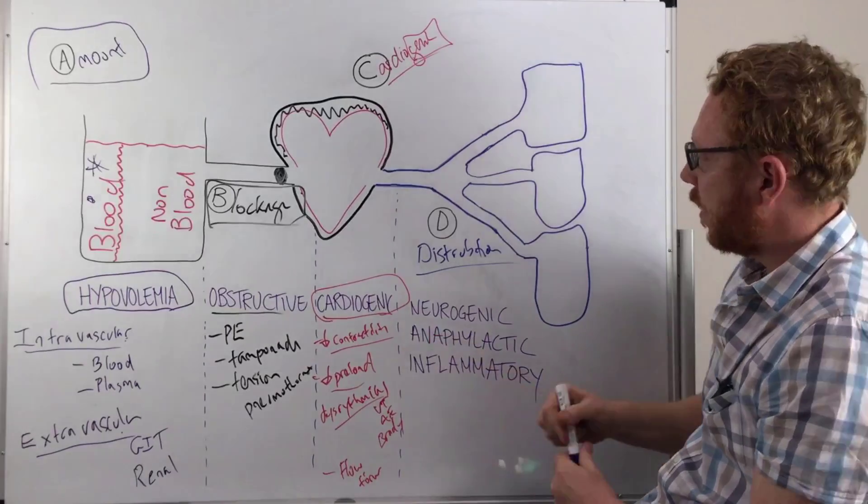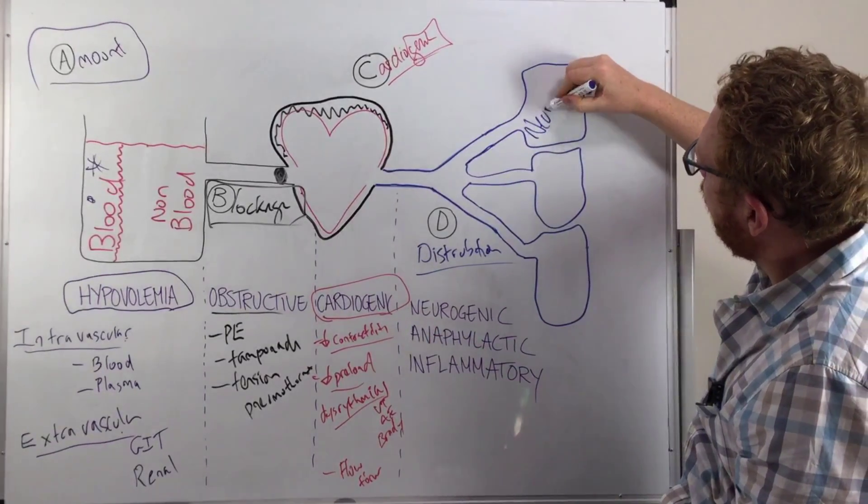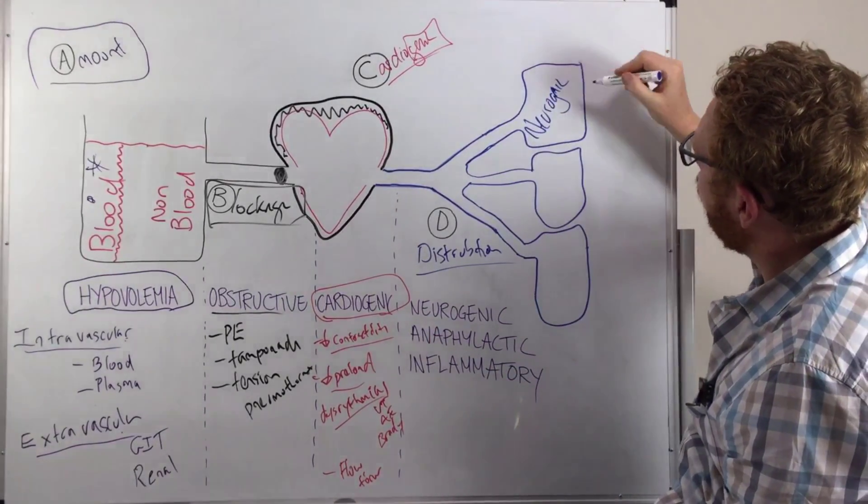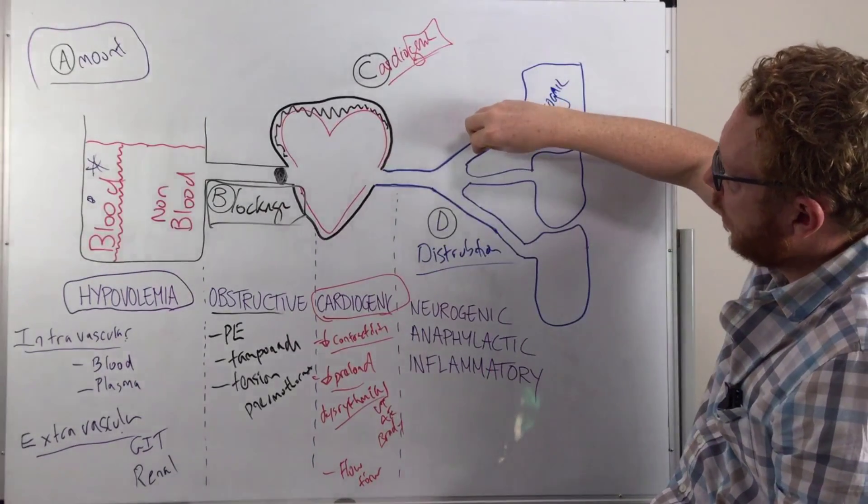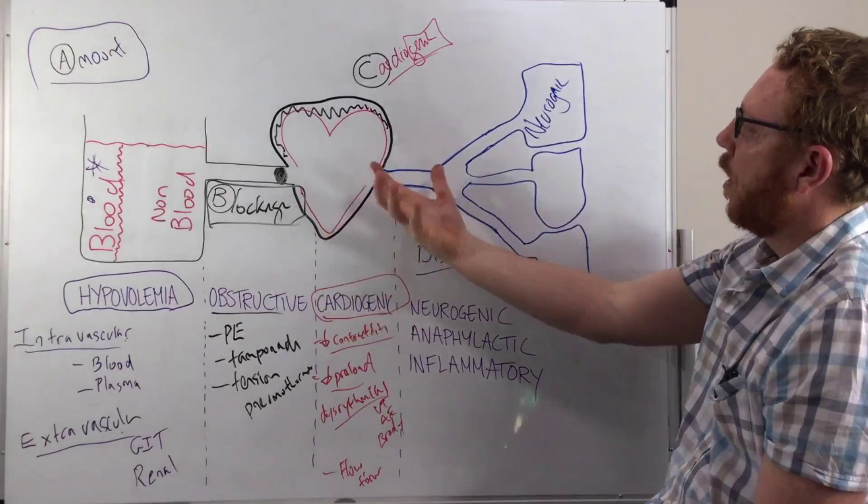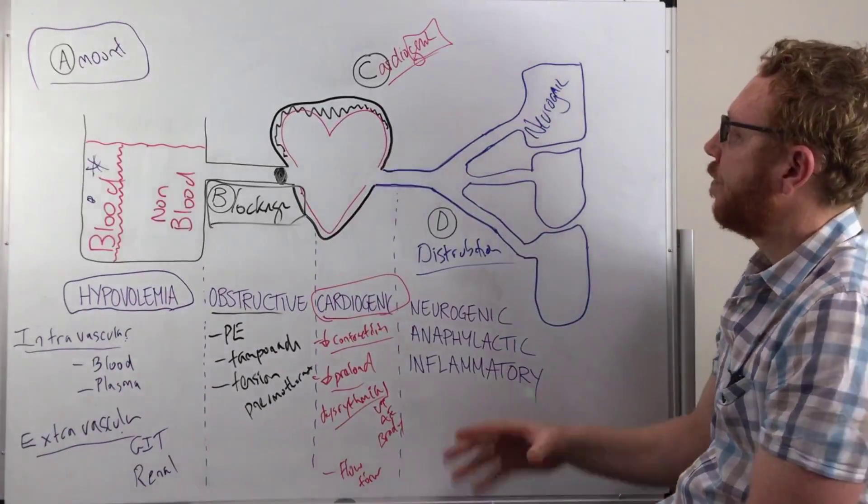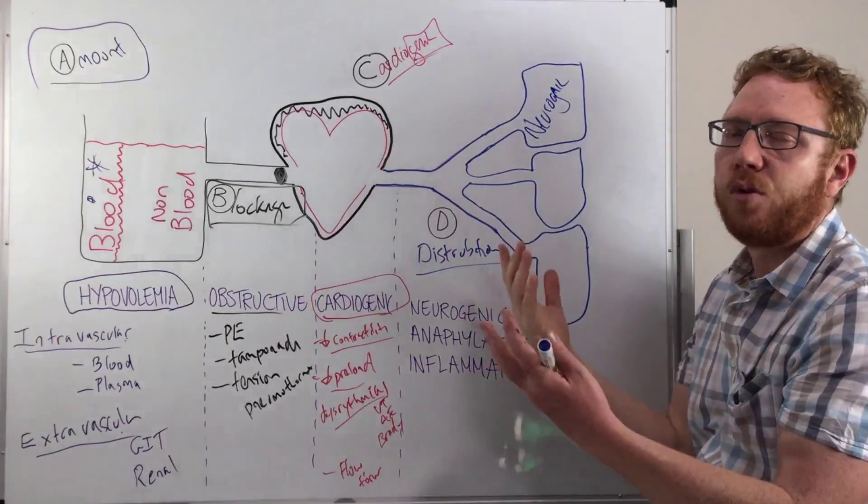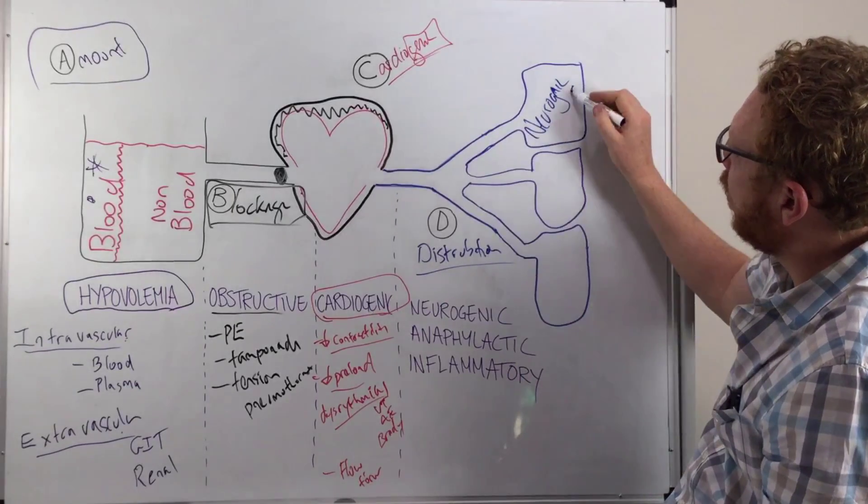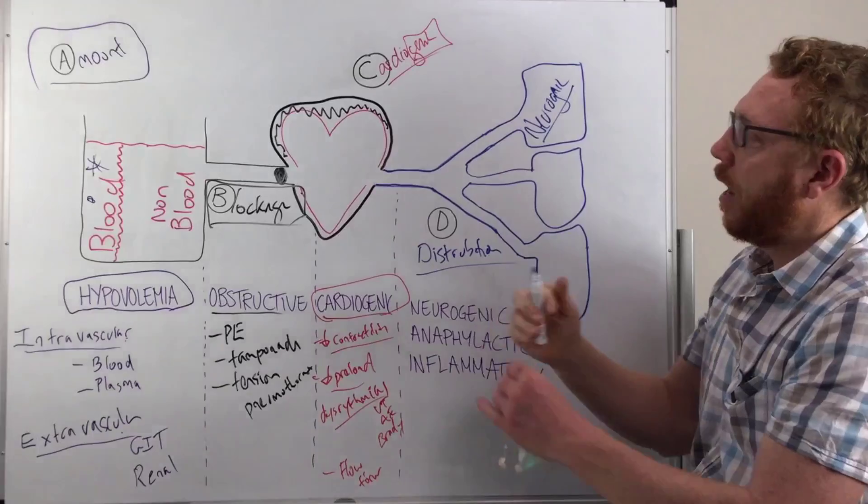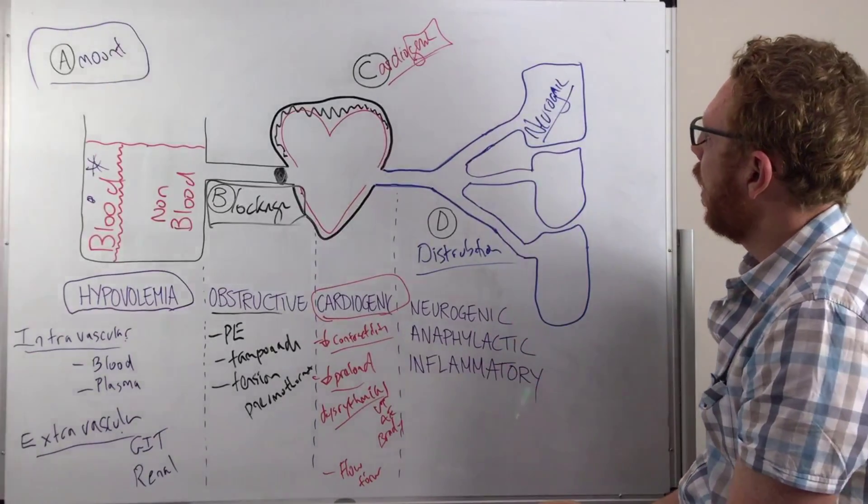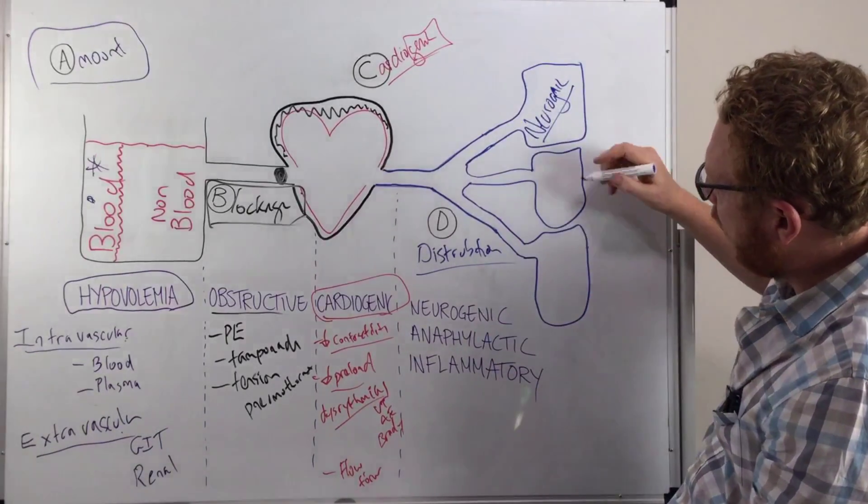Some causes of this would be neurogenic. So this is where the nerve supply and the blood vessels are dysfunctional. Therefore, it results in them dilating. Therefore, the pressure is very poor. Therefore, tissue perfusion is poor. Therefore, we have shock. Neurogenic, a good example would be a spinal cord injury, particularly above a certain level. And there's a dysregulation of the, particularly the sympathetic nervous system. So neurogenic is a good one.